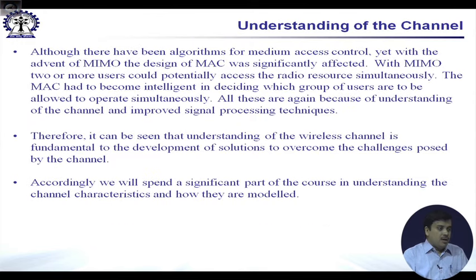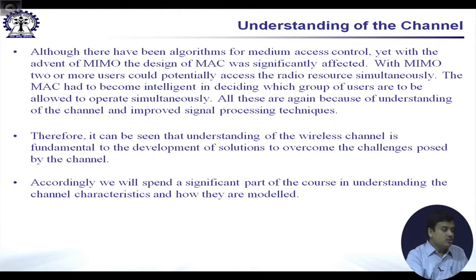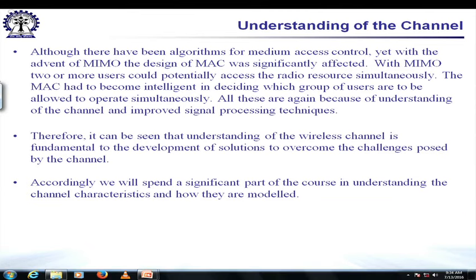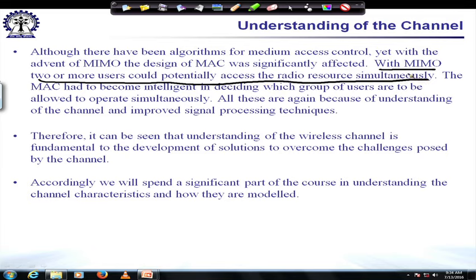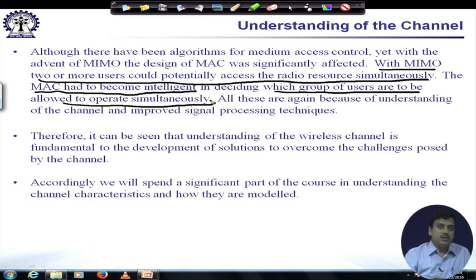For example, the medium access controller (MAC) is one of the most important entities controlling access to the physical medium. When MIMO was introduced, it allows two or more users to be connected simultaneously. Two or more users could potentially access the radio resource at the same time — this was not possible before. With this, the MAC had to become intelligent to decide which groups of users should operate simultaneously, and these changes are reflected in 3G and 4G technologies.